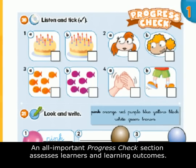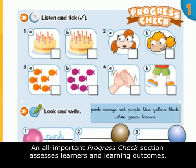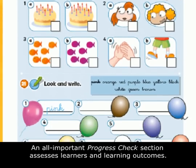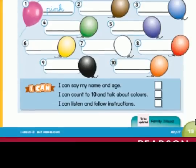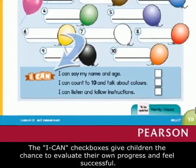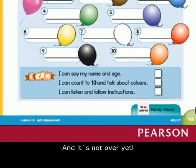An all-important progress check section assesses learners and learning outcomes. The I Can checkboxes give children the chance to evaluate their own progress and to feel successful.